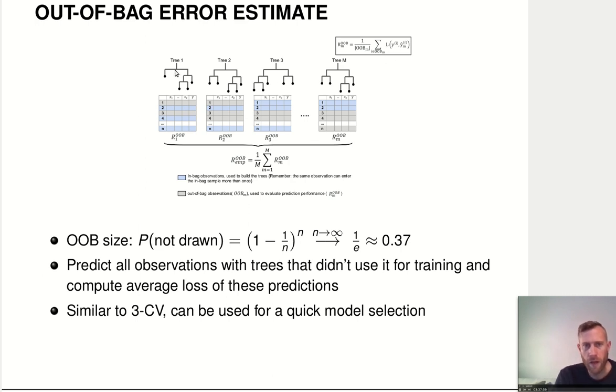If you think about a random forest as a bunch of different trees, every tree is based on a different bootstrap sample. The training data in the bootstrap sample is indicated in blue here. So the first tree was trained on that dataset, second tree on that dataset, third tree on this dataset, all the way up to the Mth tree.